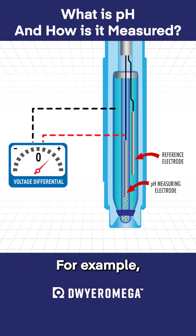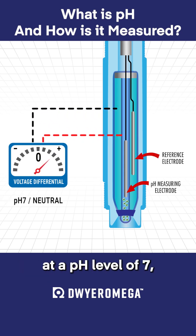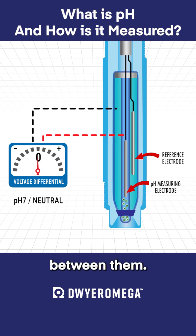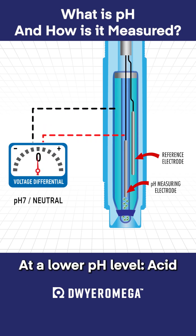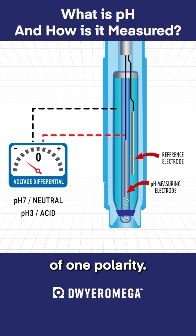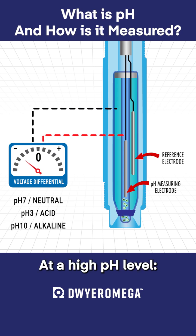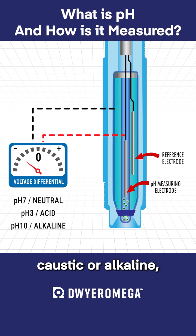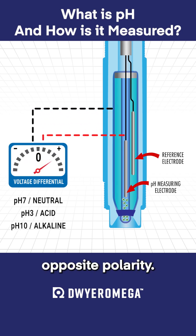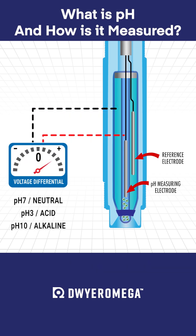For example, at a pH level of 7, which is neutral, the electrodes will produce 0 volts between them. At a lower pH level, acid, a voltage will be developed of one polarity. At a high pH level, caustic or alkaline, a voltage will be developed of the opposite polarity.